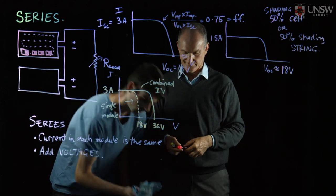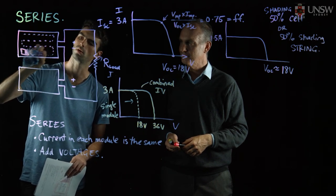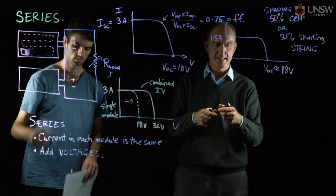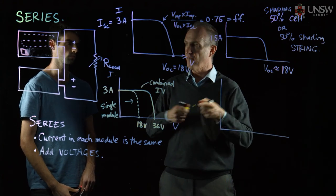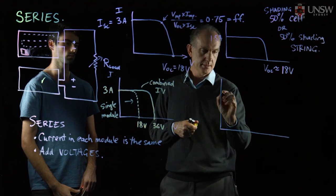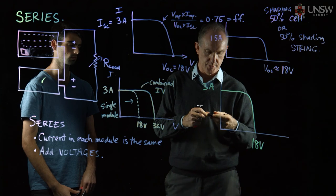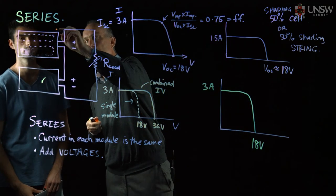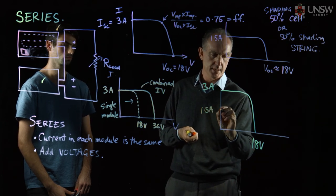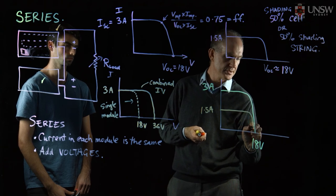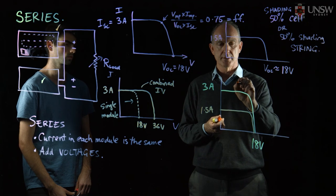What would happen to the IV curve if just one cell was shaded by 50% for these two modules in series? We have one unshaded module with 3 amps and 18 volts open circuit voltage. For the shaded module, with one cell shaded 50%, we have 1.5 amps short circuit current and an open circuit voltage slightly below but close to 18 volts. Those are the two separate IV curves — the unshaded and shaded.